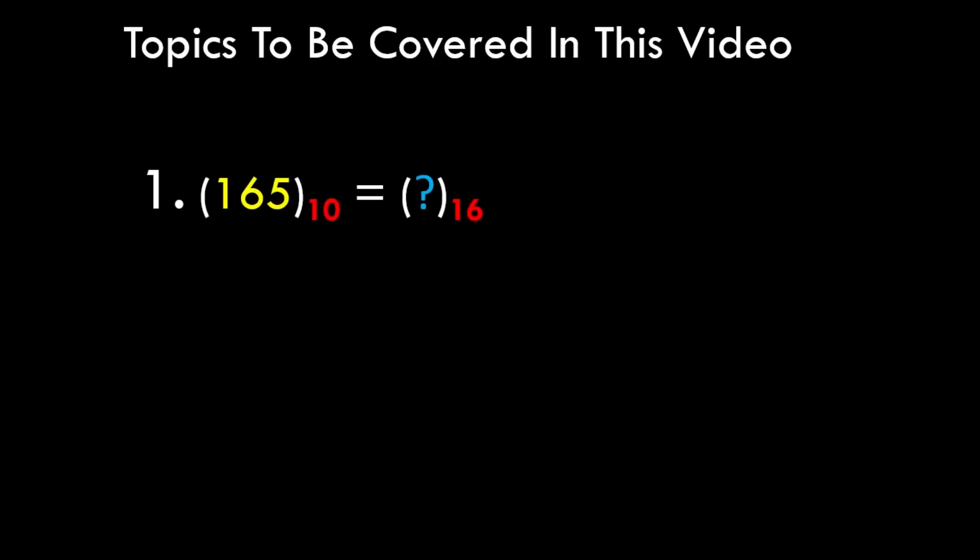In this video we will be solving three different problems wherein we have three decimal numbers which need to be converted to hexadecimal numbers. The first question is a plain integer value decimal number, the second one is a fractional number, and the third one is a combination of both.